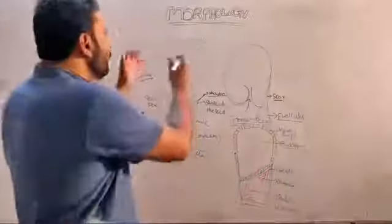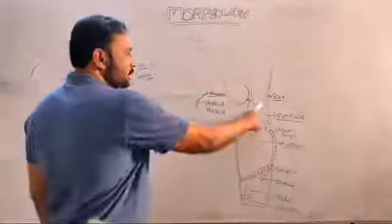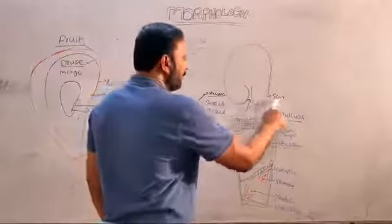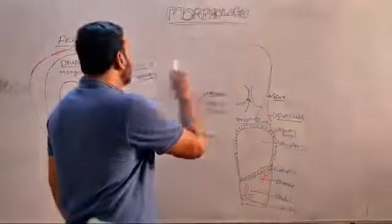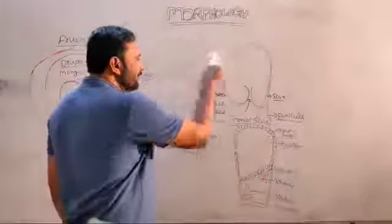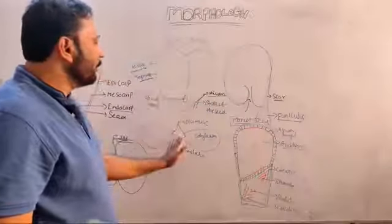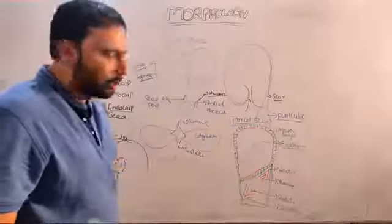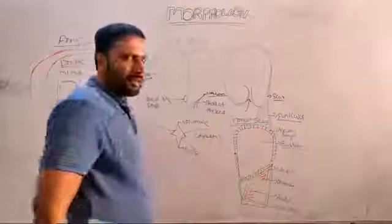Dicot seeds develop from the ovule. The stalk of the ovule develops into the stalk of the seed; the scar of the ovule develops into hilum; micropyle develops into seed pore; outer integument develops into testa; inner integument develops into tegmen. Inside the seed, the embryonal axis is present containing plumule and radicle. Plumule develops into shoot system; radicle develops into root system. Two cotyledons are present.